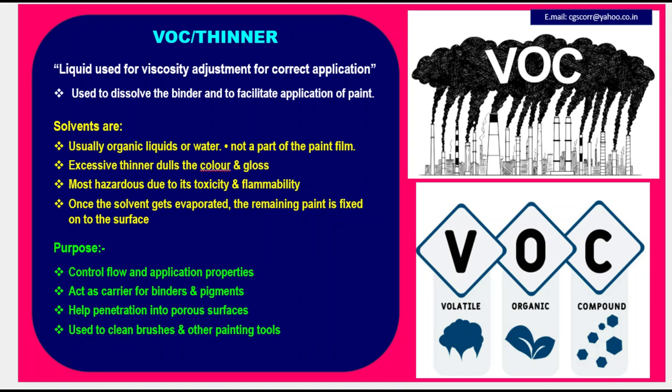Volatile Organic Compounds / Thinner: Liquid used for viscosity adjustment for correct application. Used to dissolve the binder and to facilitate application of paint. Solvents are usually organic liquids or water, and are not part of the paint film. Excessive thinner dulls the color and gloss, and is most hazardous due to its toxicity and flammability. Once the solvent evaporates, the remaining paint is fixed onto the surface. Purpose: to control flow and application properties, act as carrier for binders and pigments, help penetration into porous surfaces, and clean brushes and other painting tools.